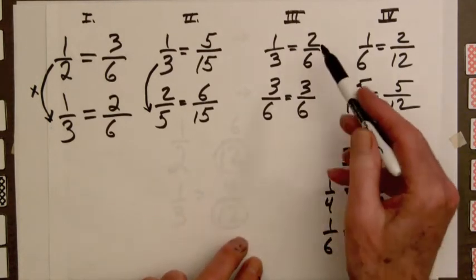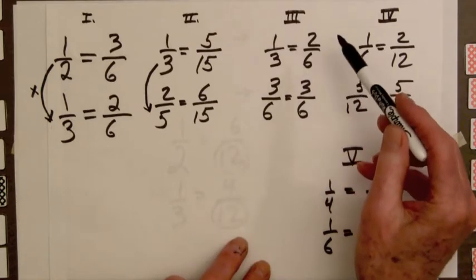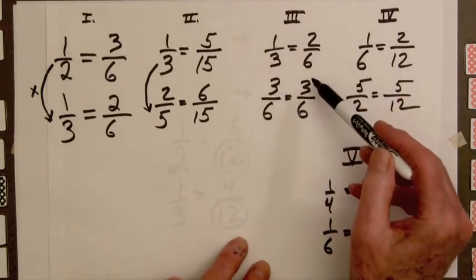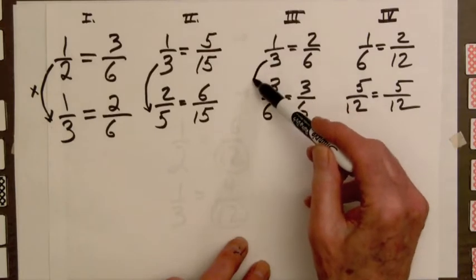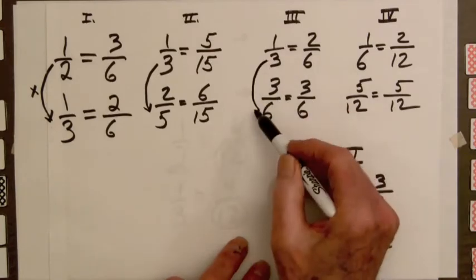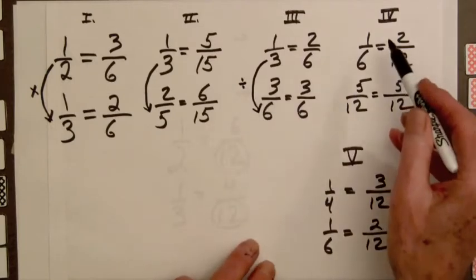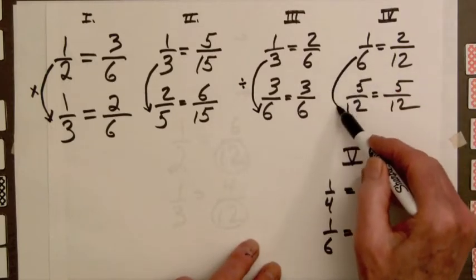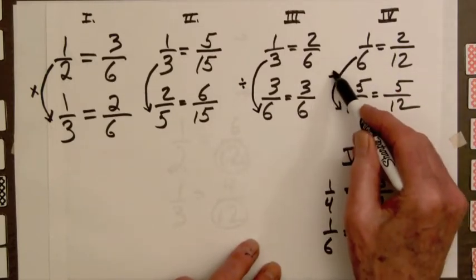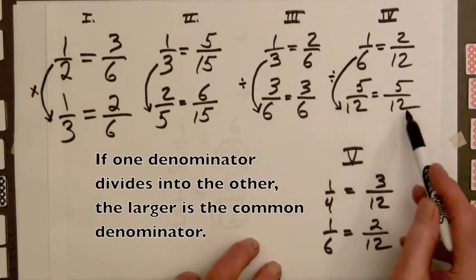In example three we have something different. Only one fraction is replaced, and in this case three divides into six. Also in example four, six divides into twelve, and only one fraction is replaced.